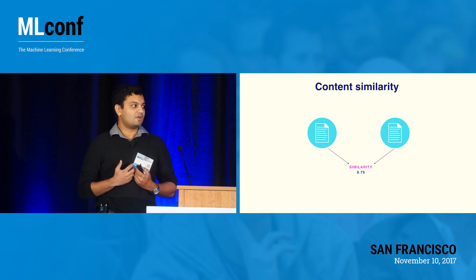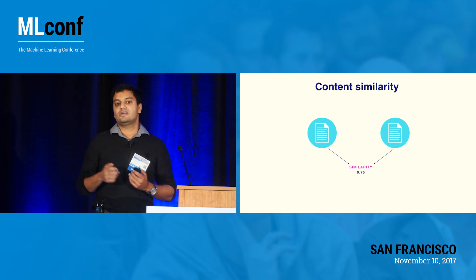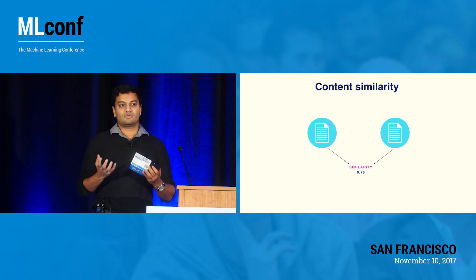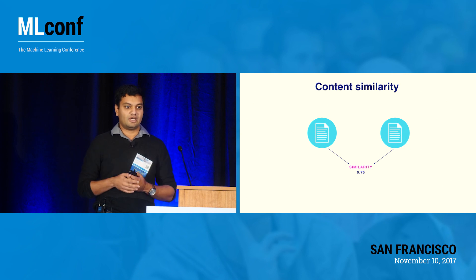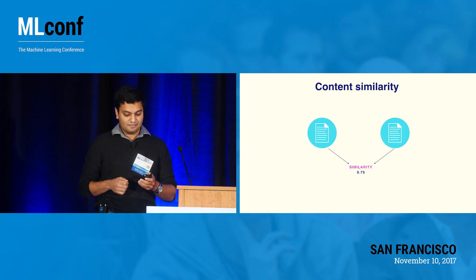Another really important use case for us is content similarity. Given two pieces of content, how semantically similar are they? This is one of those examples where if you just do superficial stuff like looking at how many words are in common, it just breaks down really quickly.